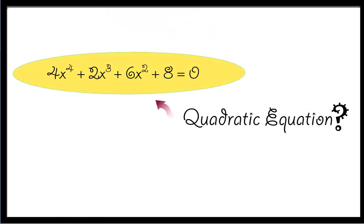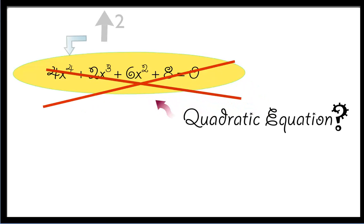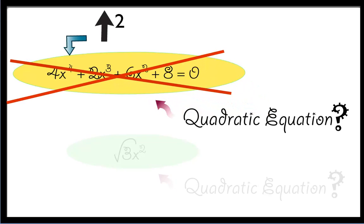Is 4x⁴ plus 2x³ plus 6x² plus 8 equals zero a quadratic equation? No, it is not. Certainly the degree of the variable exceeds 2. Now let's look at another example.